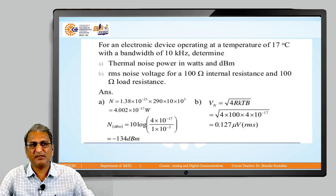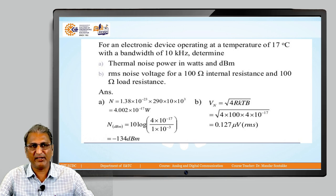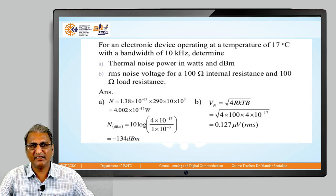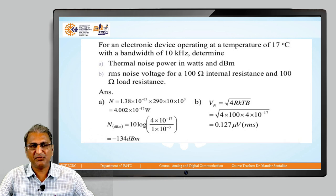Second example: for an electronic device operating at a temperature of 17 degrees Celsius with a bandwidth of 10 kilohertz, determine the thermal noise power in watts and in decibel-milliwatts (dBm), and the RMS noise voltage for 100 ohm internal resistance and 100 ohm load resistance. N = 1.38 × 10⁻²³ × 290 × 10 × 10³, and the noise power is 4.002 × 10⁻¹⁷ watts.